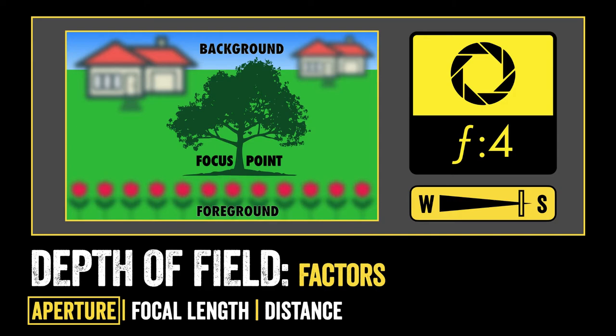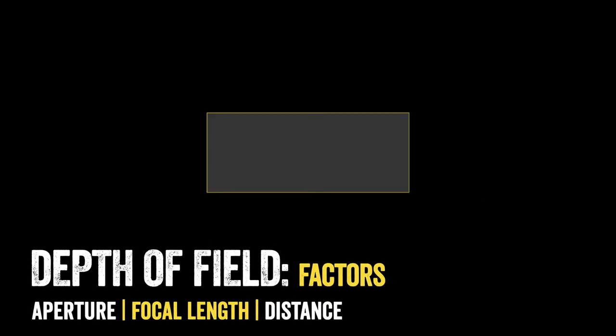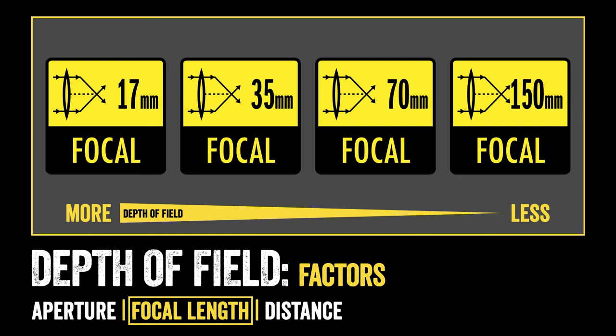Now that we've seen a visualization of how aperture impacts depth of field, we'll take a look at how focal length impacts our depth of field. The focal length is the millimeter of the lens. So if I have a wide angle lens like a 17mm on the left, I have more depth of field. As I zoom or change to larger lenses — moving from 35mm to 70mm to 150mm — every time I increase the focal length of the lens, I decrease the depth of field.